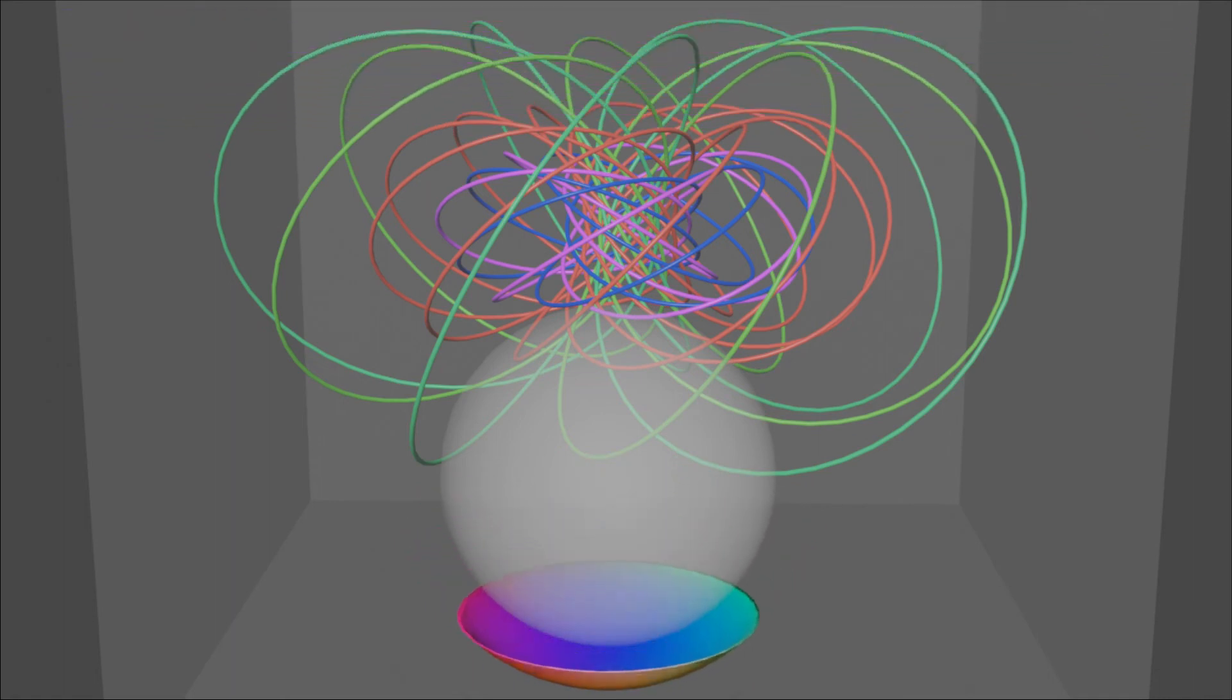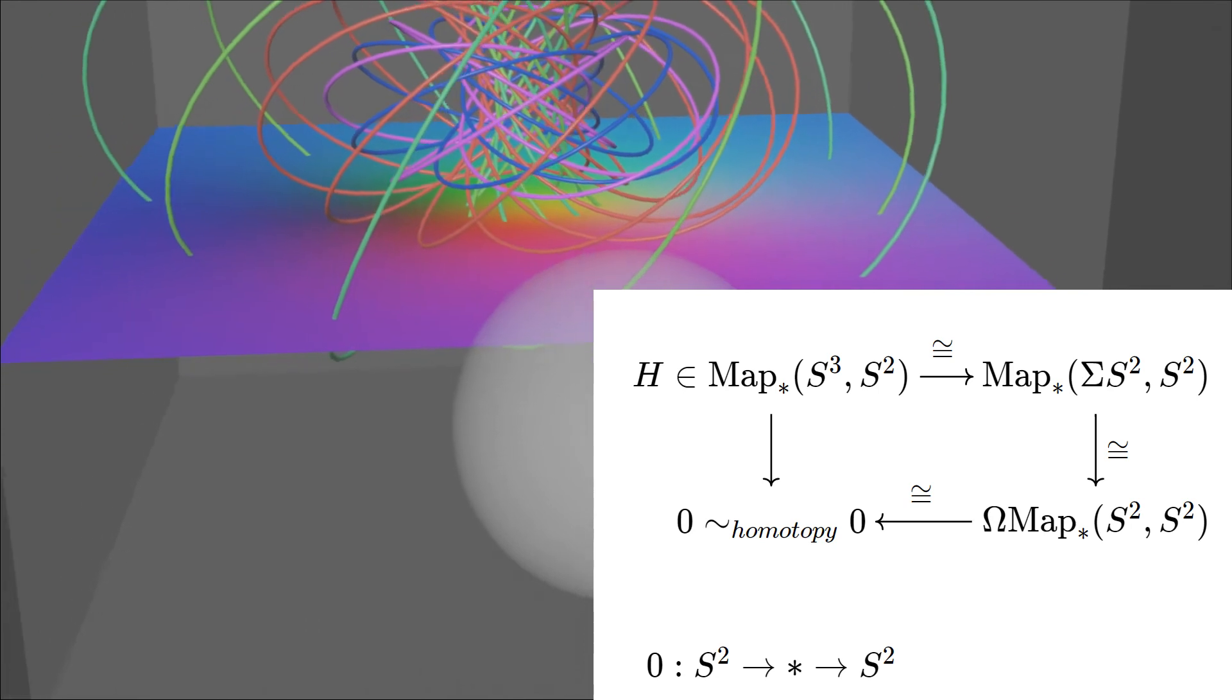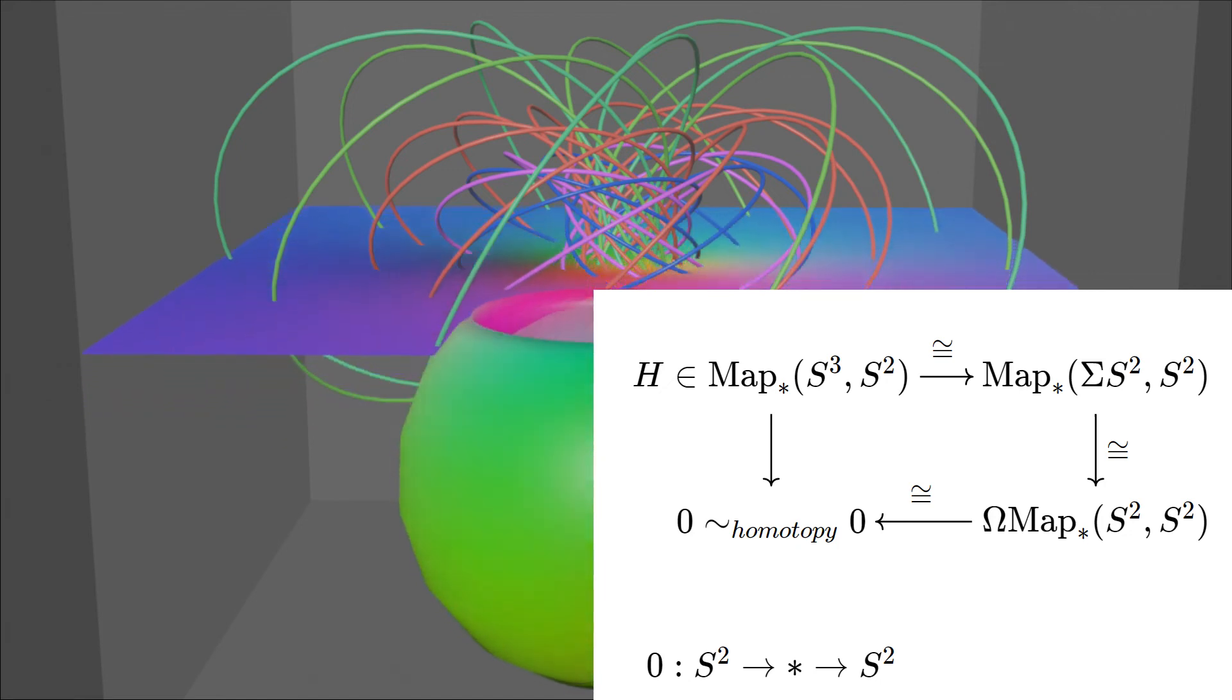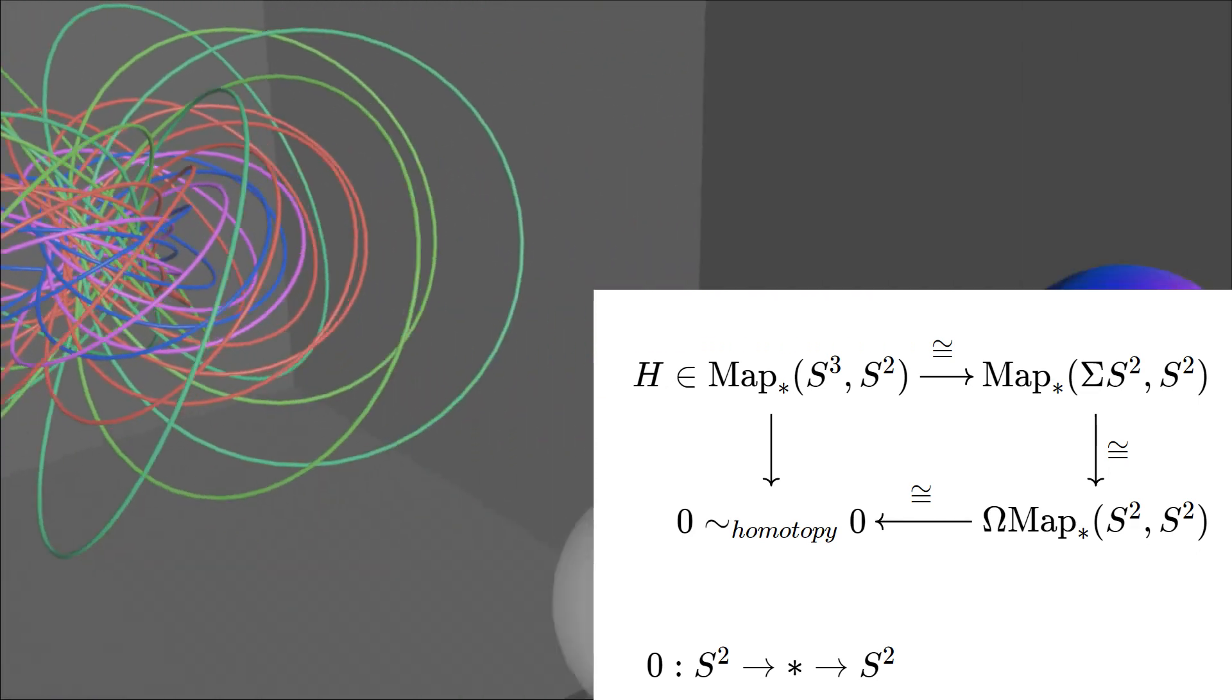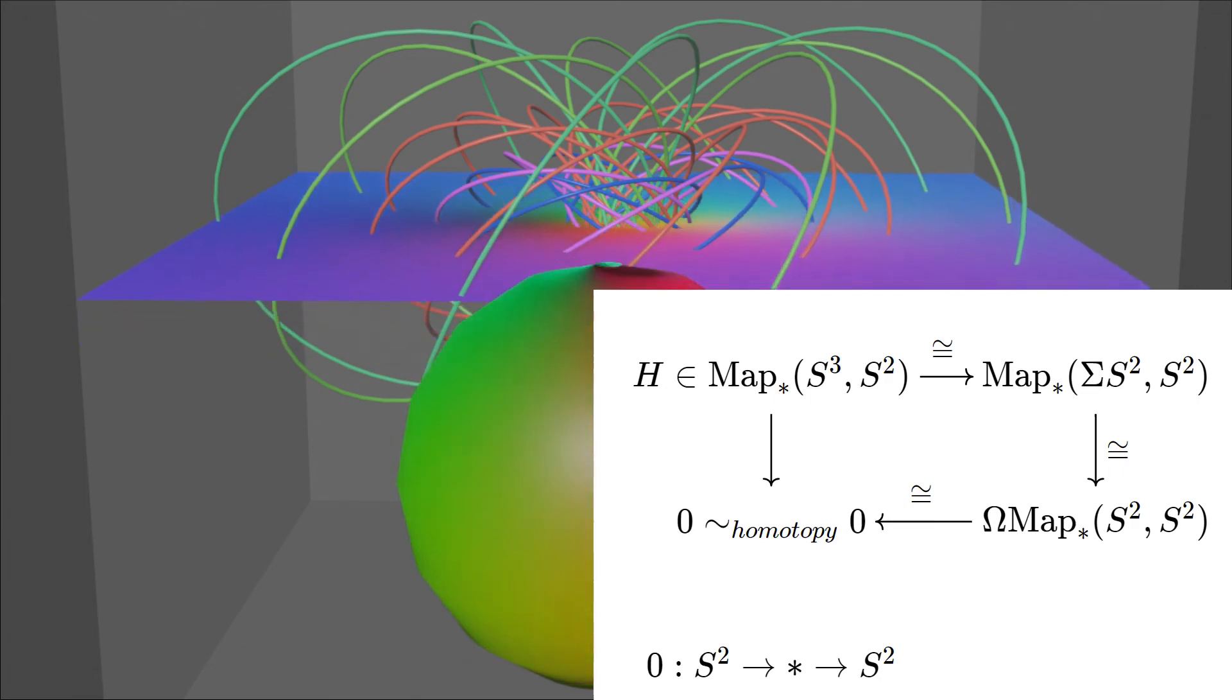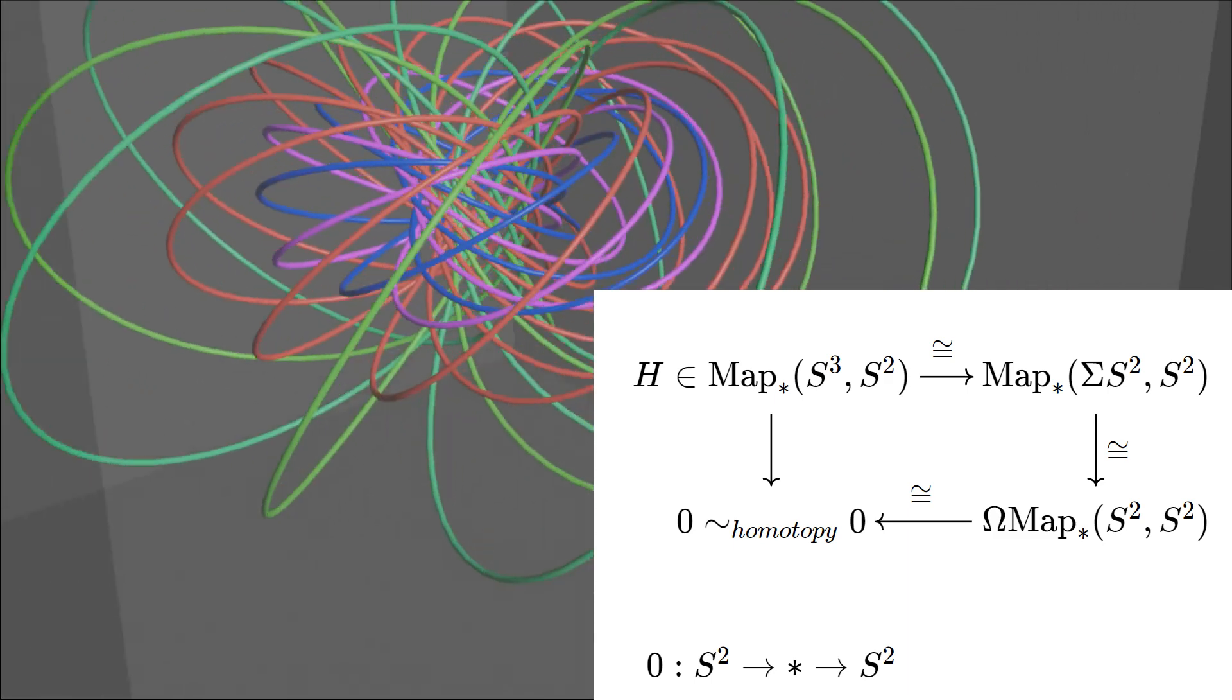And for those people who know homotopy groups, what we did actually is transform the H into a homotopy from zero map to itself by the adjunction between suspension and looping. And this homotopy is non-trivial, so by this way we get a non-trivial proof of zero equal to zero.